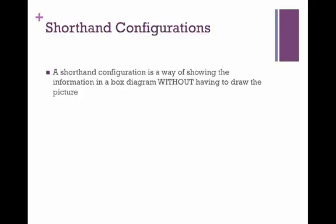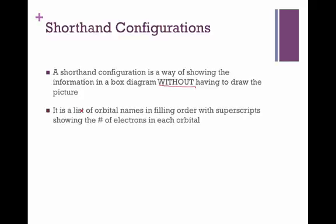A shorthand configuration is a way of showing the information in a box diagram without having to draw the big cumbersome picture. Basically, it ends up looking like a list of orbitals in filling order, and then we use superscripts with each orbital to show the number of electrons that each one has. We're going to get the same kind of information—what orbitals are filled and how many electrons are in them—but in the form of a list as opposed to a picture.